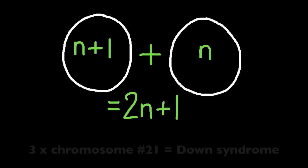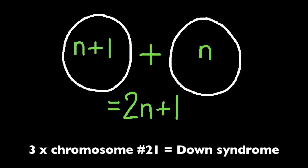During fertilization, if one of these gametes with N plus 1, or two copies of chromosome number 21, fuses with one with the normal number of chromosomes, one copy of chromosome number 21, then the result is a cell with two N plus 1 chromosomes, or three copies of chromosome number 21, and this results in Down syndrome.